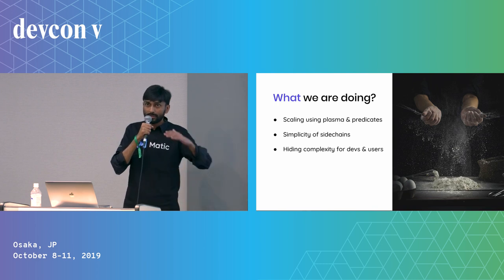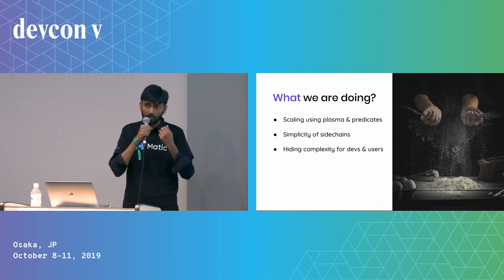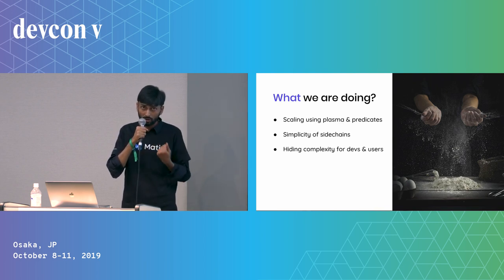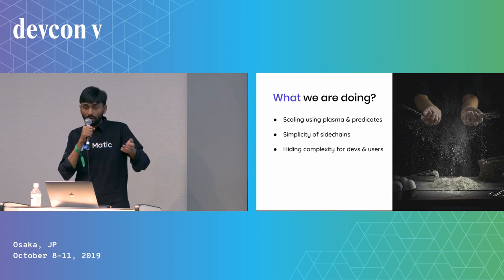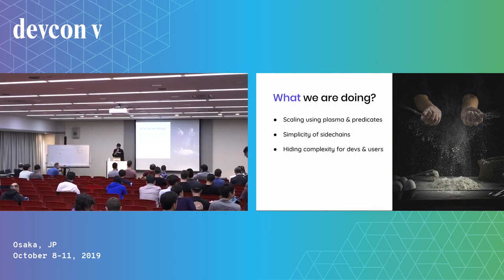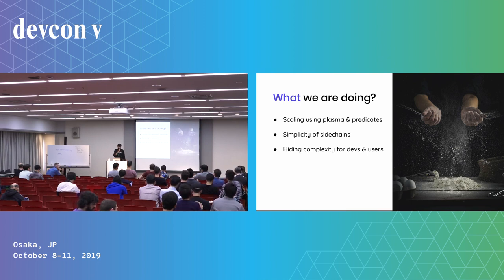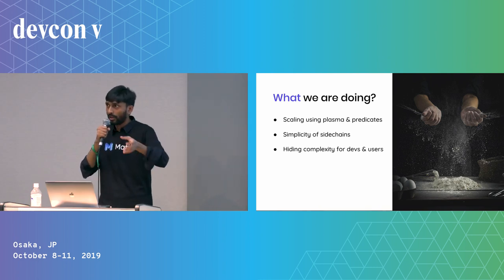We also use side chains. Side chains are simple, but the problem with other layer-two solutions is there's a trade-off between the amount you need to settle your transactions and make transactions on the layer two. What we use is simple side chains using Plasma and proof of stake, and we hide all other complexities underneath and just provide dApp developers what they need.